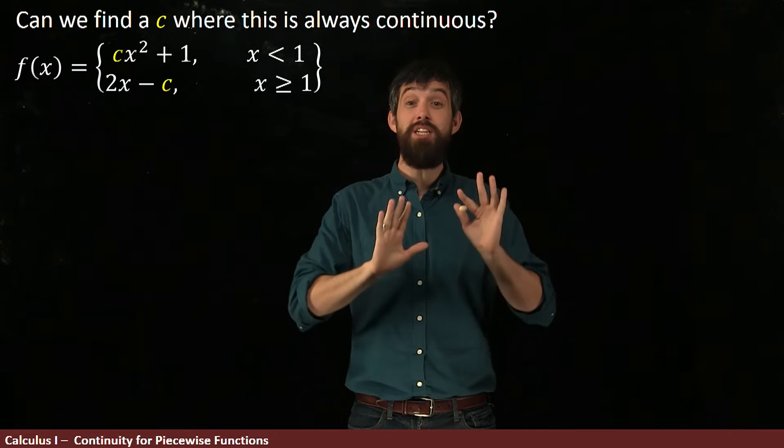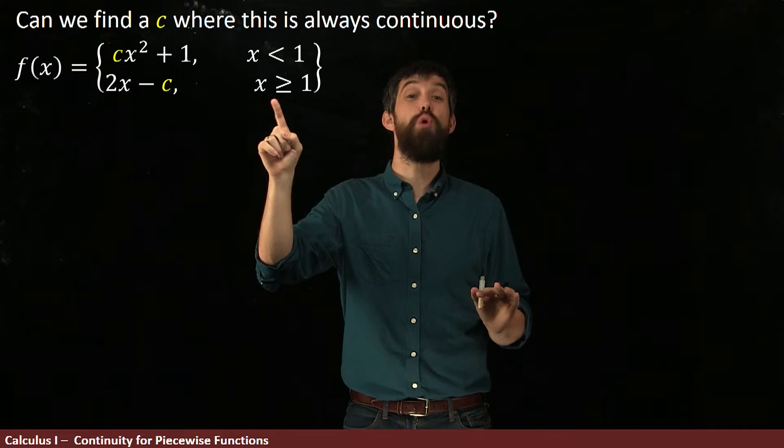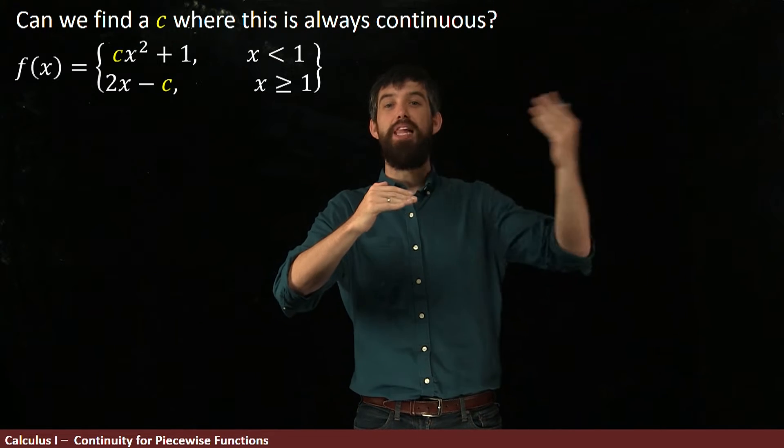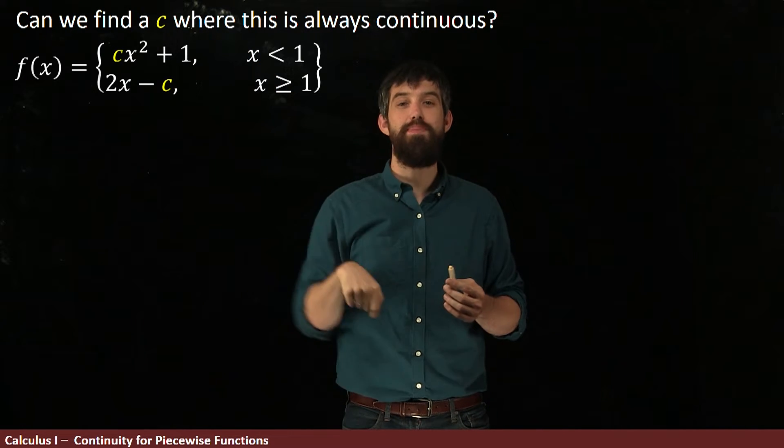So the only possibility, the only spot where there could be a problem was this value of x equal to 1. That's where it might be that the limit from the left and the limit from the right and the function value might be different. Okay, so let's match them.